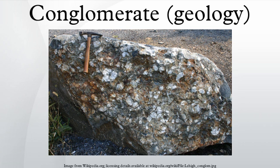Conglomerates are rarely composed entirely of gravel-size clasts. Typically, the space between the gravel-size clasts is filled by a mixture composed of varying amounts of silt, sand, and clay, known as matrix. If the individual gravel clasts in a conglomerate are separated from each other by an abundance of matrix such that they are not in contact with each other and float within the matrix, it is called a paraconglomerate.